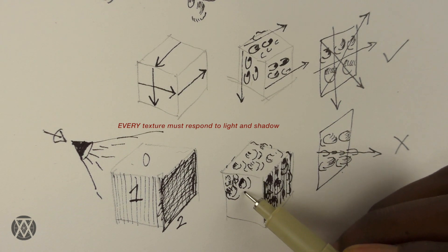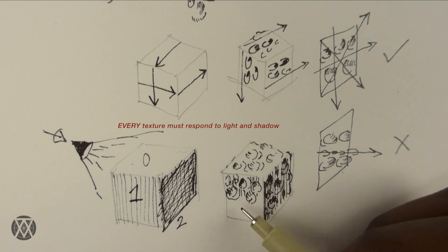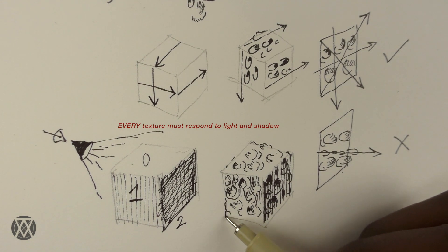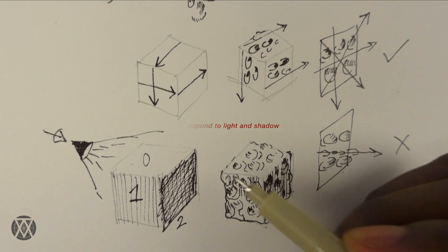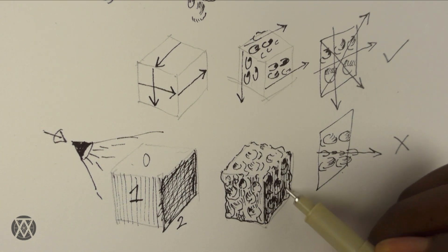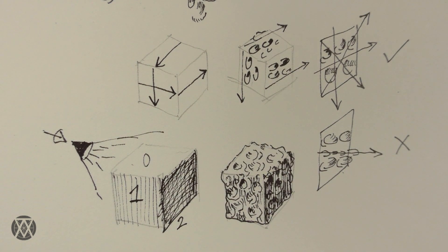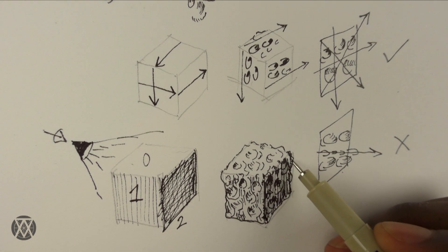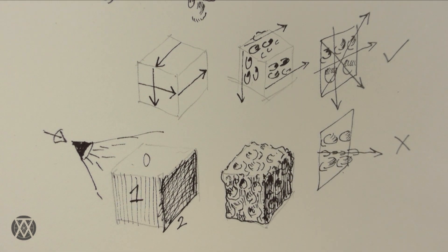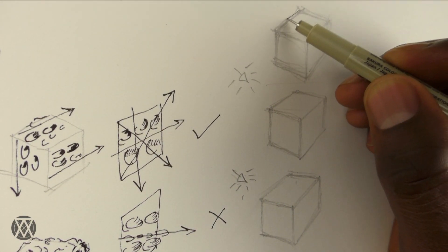We basically apply our stroke variations to convey different values. So in light areas, our textures, our strokes will be thinner, more sparse, and less layered, and the opposite for the shadow areas. With the block, we don't need to worry that much about blending values, so we can just focus on the distinct values of each plane.